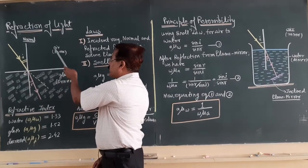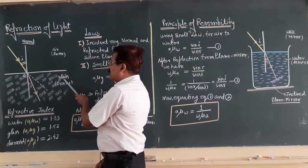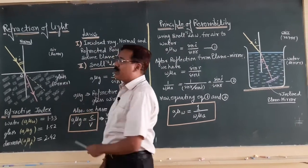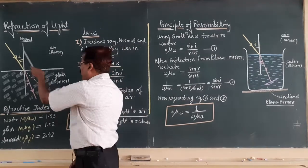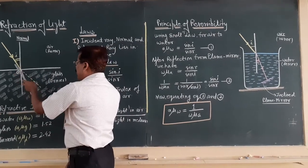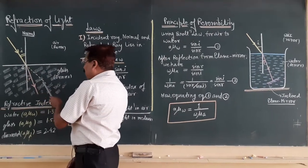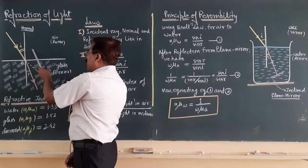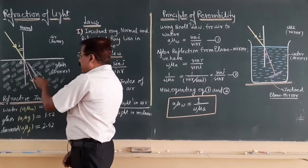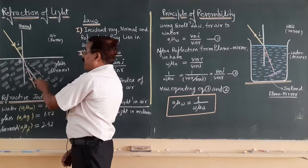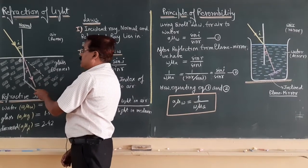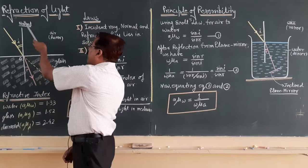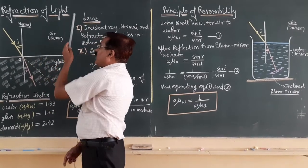For example, when light traverses from air to glass, that is from a rarer to a denser medium, this is the normal line, this is the incident ray, and this is the original track of the light. But when light traverses from air to glass, it deviates from its original track — that is, it bends towards the normal. This phenomenon is termed as refraction of light.